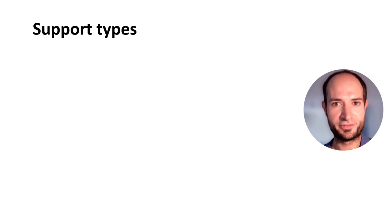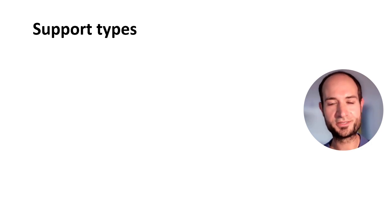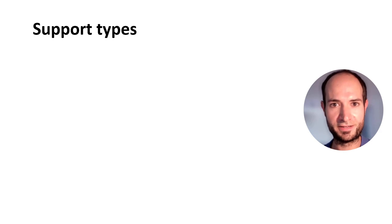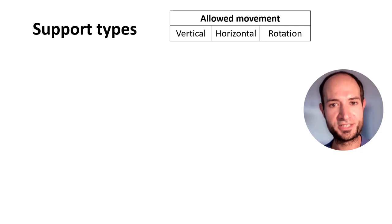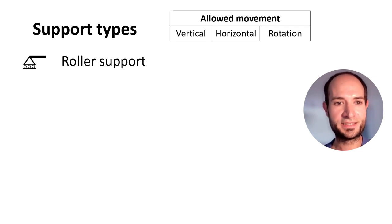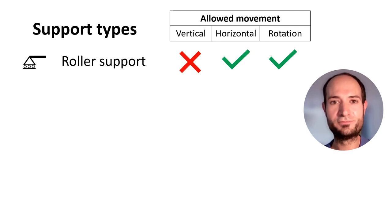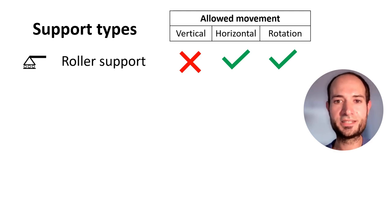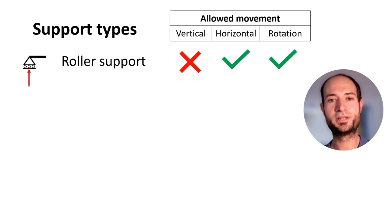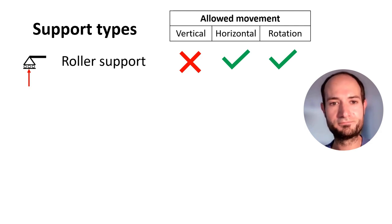Now, before calculating the reactions, we must know the type of supports we are going to find, because for each type of support we will have a different number of reactions. I'm going to show you the three most common. The roller support has wheels or rollers at the bottom. It doesn't allow vertical movement, but it allows horizontal translation and rotation. So this one provides one reaction. If it's on the ground, the ground will push the support with one reaction.